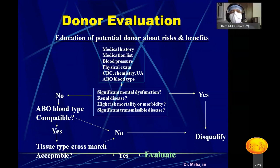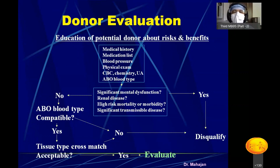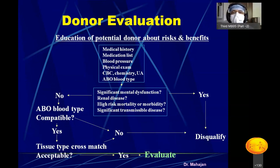Coming to donor evaluation — once the recipient is ready, you select a donor. The donor can be a live related donor, an unrelated donor, or a cadaveric donor. First-degree relatives — mother, father, son, daughter, husband, wife — are legally permitted to donate kidneys. Blood group must match first: ABO compatibility is required. Blood group O is a universal donor; blood group AB is a universal recipient.